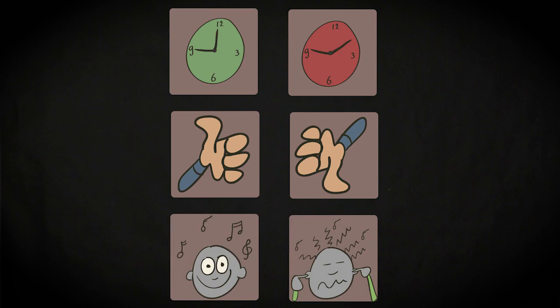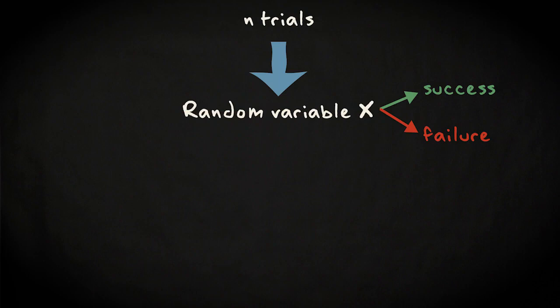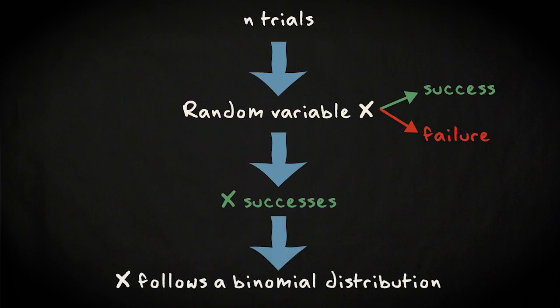When you collect a given number of observations on such phenomena or trials, the number of cases where you get one of the two outcomes, the number of successes, often follows a binomial distribution.